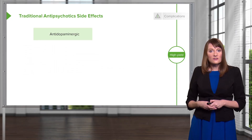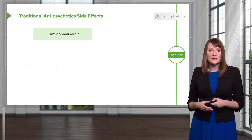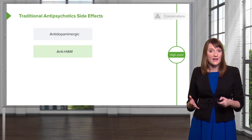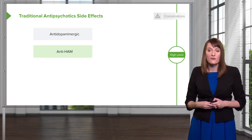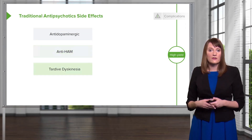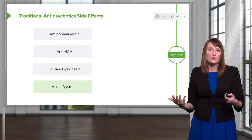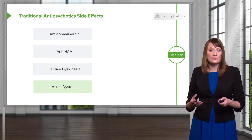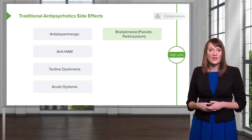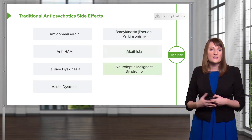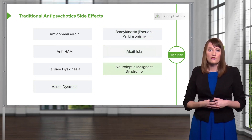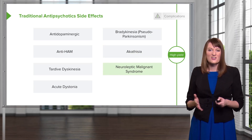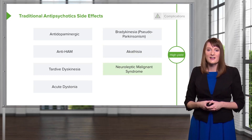To review the traditional antipsychotic side effects: these include antidopaminergic effects and anti-HAM effects, which we'll go over in more detail. Of course, tardive dyskinesia and dystonia — the EPS symptoms including bradykinesia and akathisia — are also key side effects. Neuroleptic malignant syndrome is also a serious side effect.